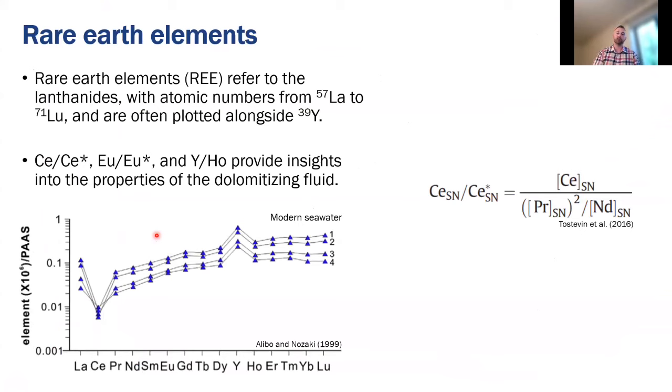Moving on to rare earth elements which refers to the lanthanide series on the periodic table here. We typically normalize these values to a shale standard and then plot them with increasing atomic number on the base of these diagrams. This here is a plot of modern seawater and one of the things that should jump out at you right away is this downward deflection in the concentration of cerium. This occurs because cerium has two different redox states and the oxidized cerium 4 is less soluble than the reduced cerium 3. So one of the things that we do is we calculate a cerium anomaly based on this equation on the right here which is essentially just a measure of the magnitude of this downward deflection here.